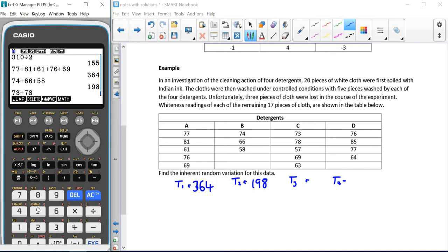For the third detergent, we have 73 plus 78 plus 57 plus 69 plus 63, which gives us 340.